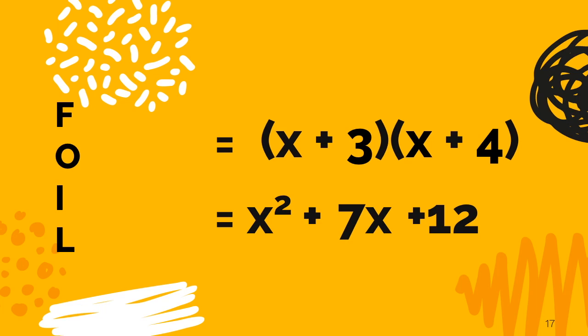And we got that trinomial when we multiply those two binomials together. Please take note that we got a middle term when we did that. So this is called a trinomial.